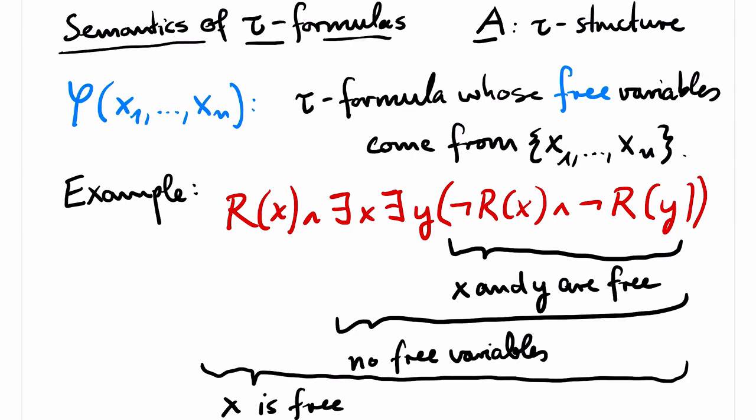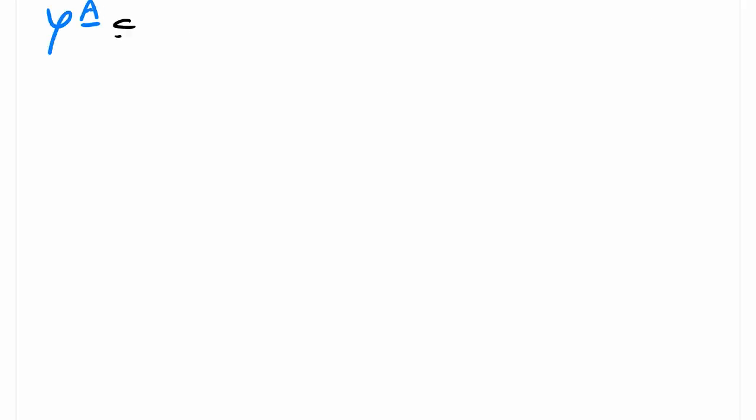Recall that each tau term t over the variables x1 up to xn describes over A an operation of arity n. We will describe in the following how the tau formula phi with free variables from x1 up to xn describes over A a relation of arity n. We write phi superscript A for this relation. The definition of this relation is again by induction over the inductive definition of the syntax of phi.